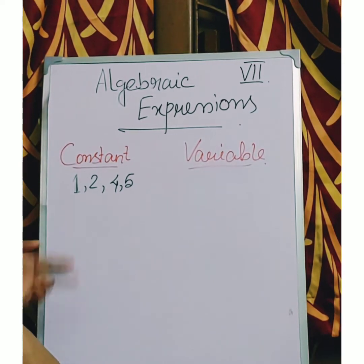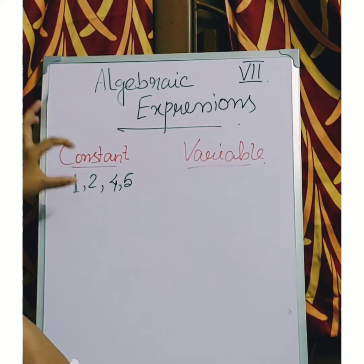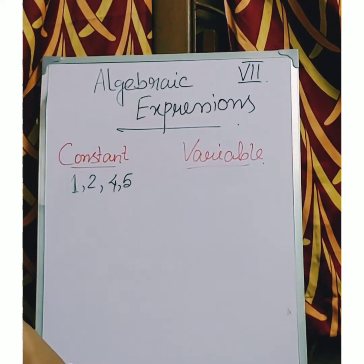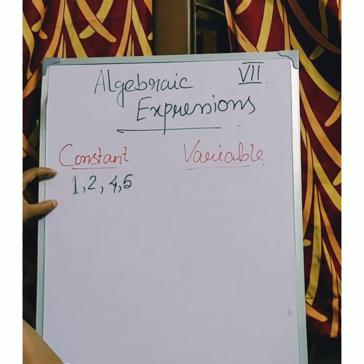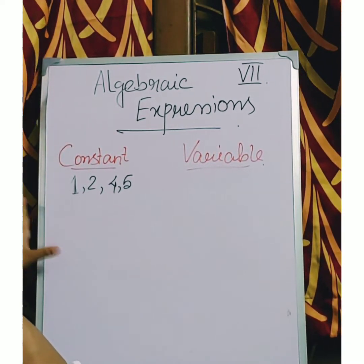That means in any condition, in any situation, the face value of 2, the writing process of 2 does not change. So that is why the numerals or the counting numbers in algebra are constant.